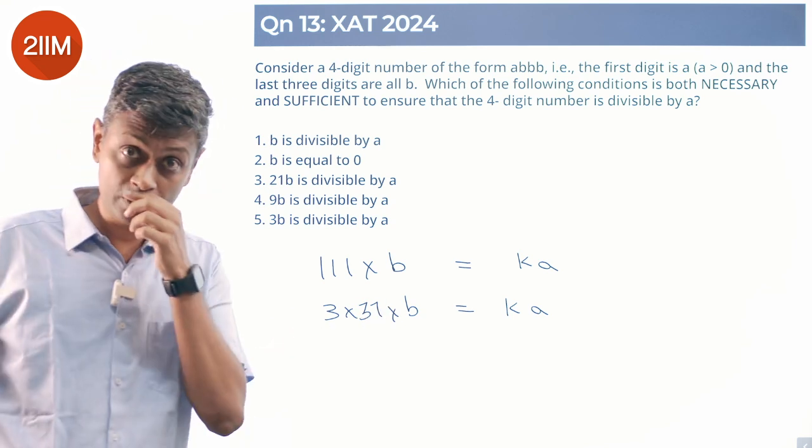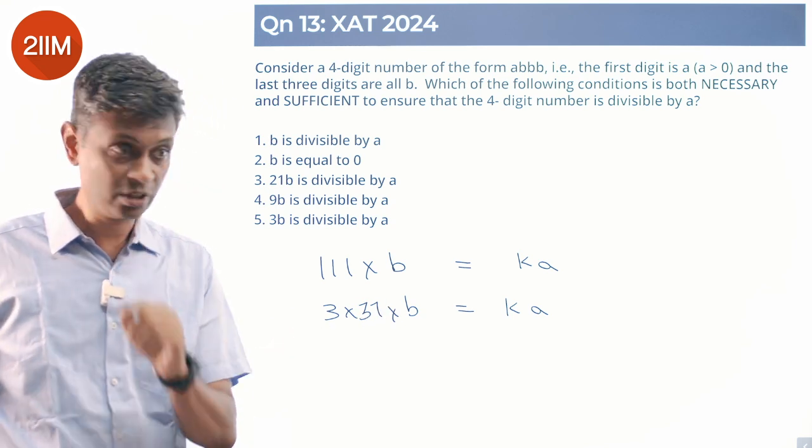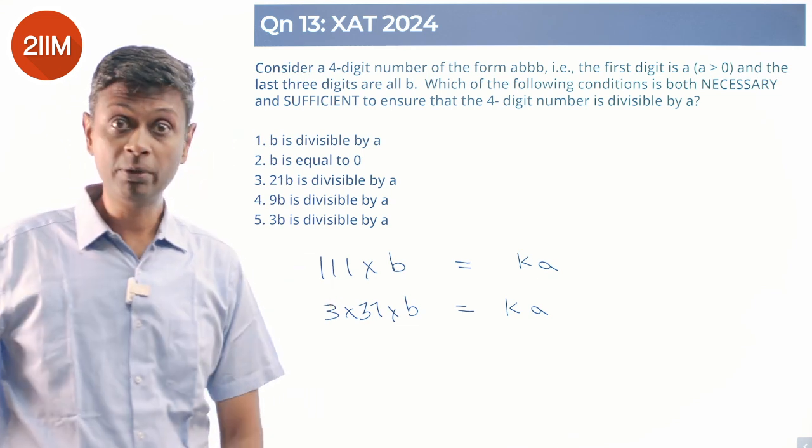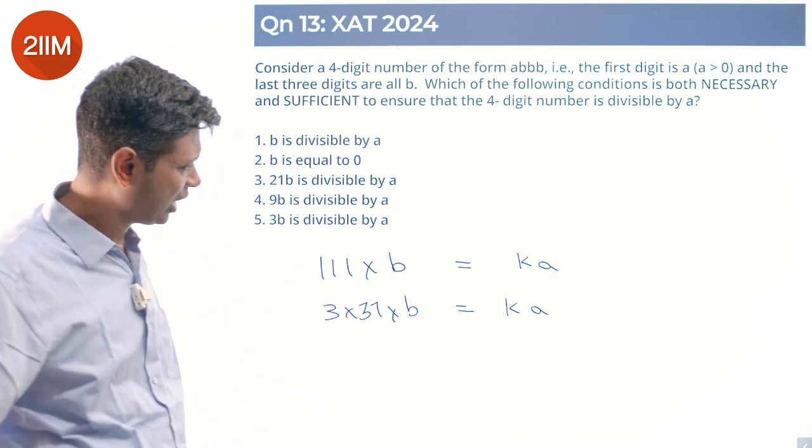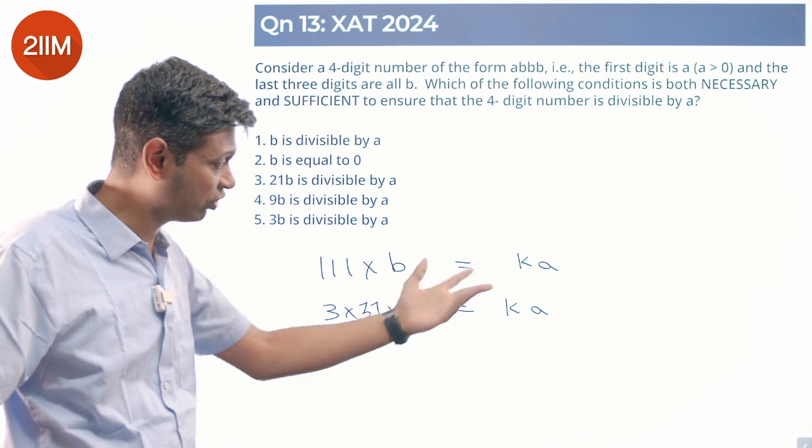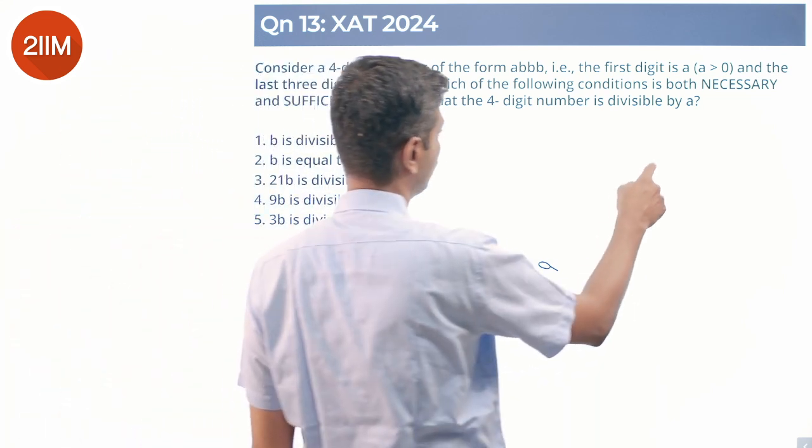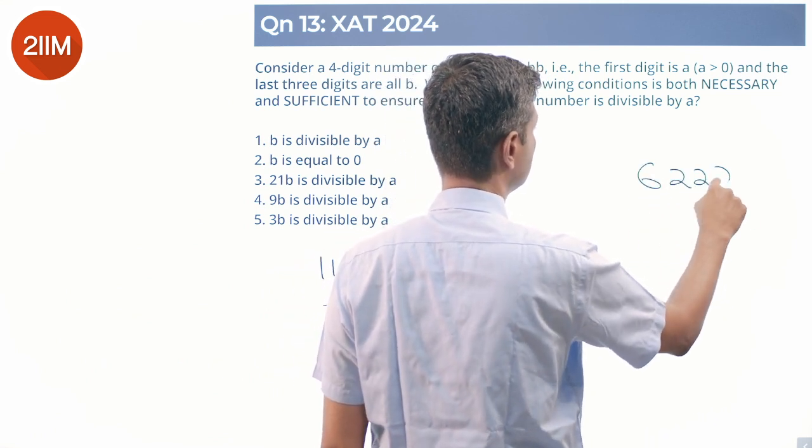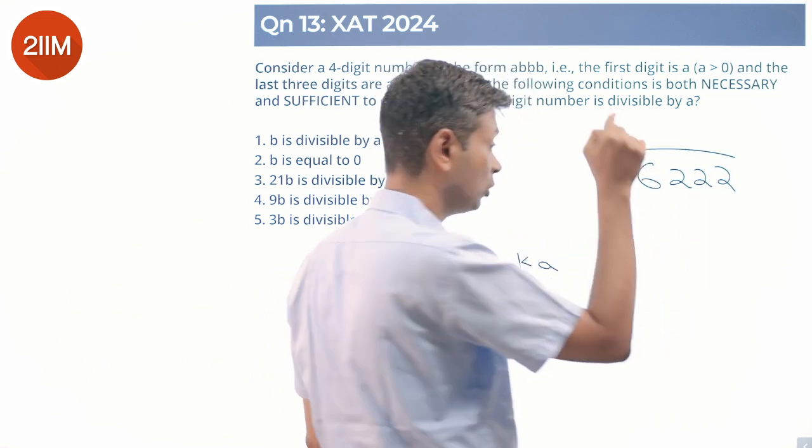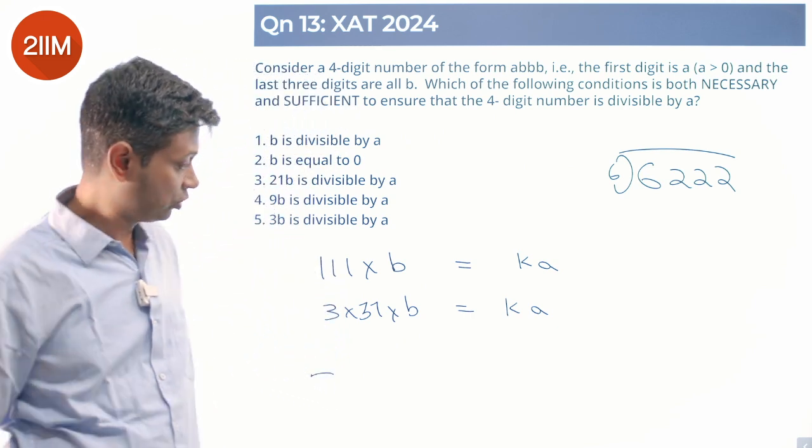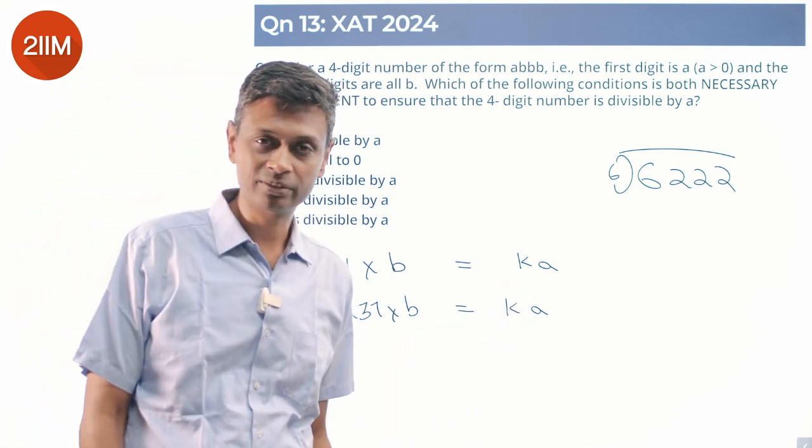3B could be a multiple of A. A very interesting question. So I could have a scenario where A is 6 and B is 2. Think about number which is 6 triple 2 divided by 6. This will work. Because there is a 3 sitting here. 37 is irrelevant as far as A is concerned.